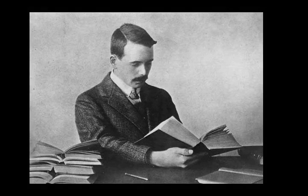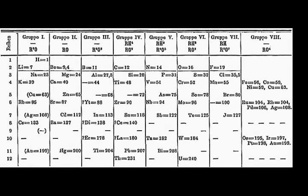Electrons arrange themselves in the atom in such a way that the total energy they have is minimized, so they occupy the lowest energy orbitals available unless energy has been supplied. Only the outermost electrons have enough energy to break free of the nucleus and participate in chemical reactions with other atoms. The others are called core electrons. Elements are known with up to the first seven shells occupied.